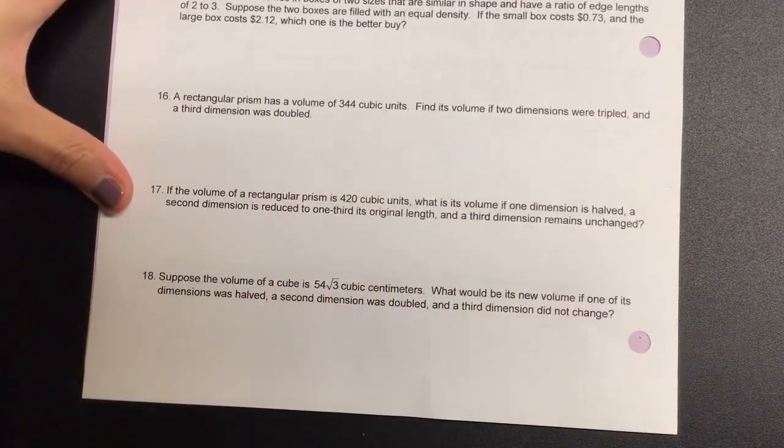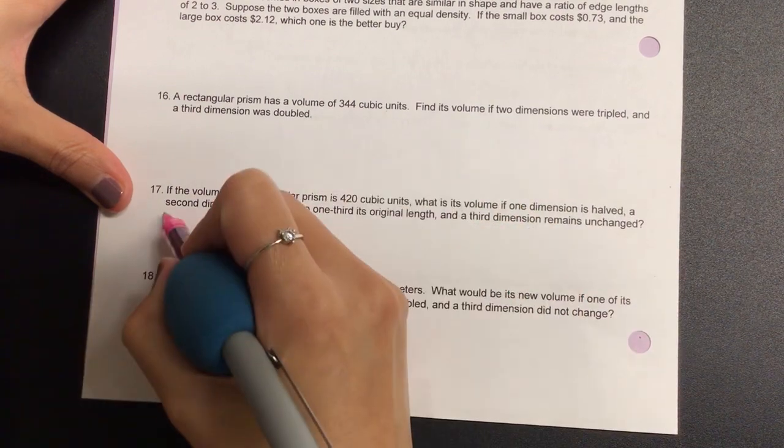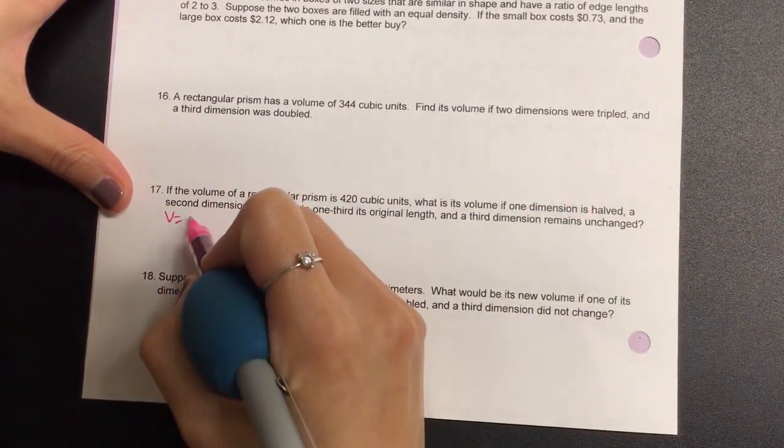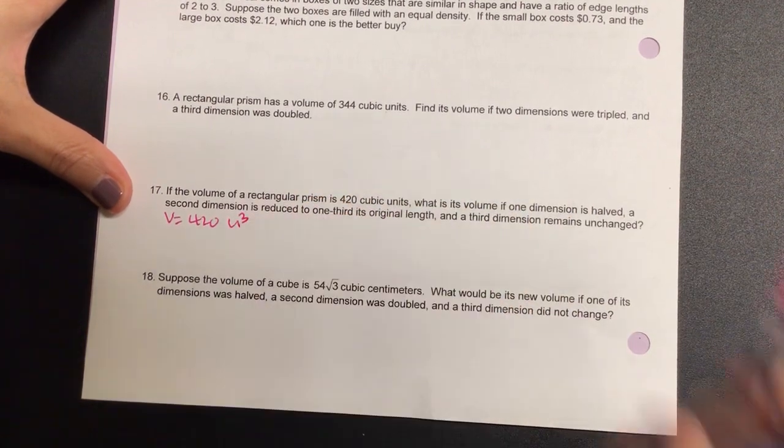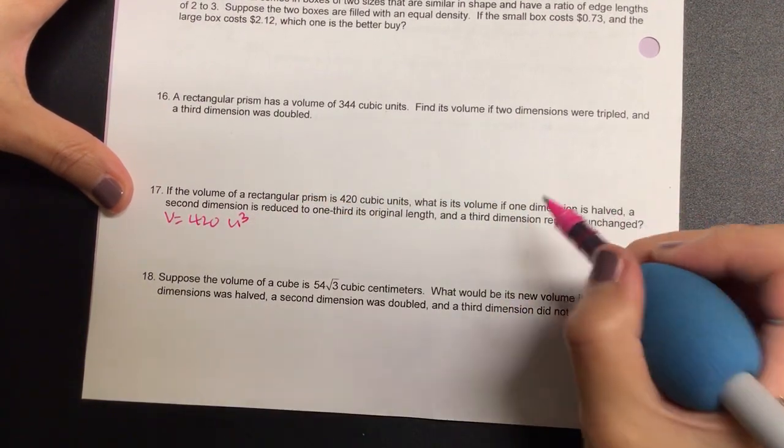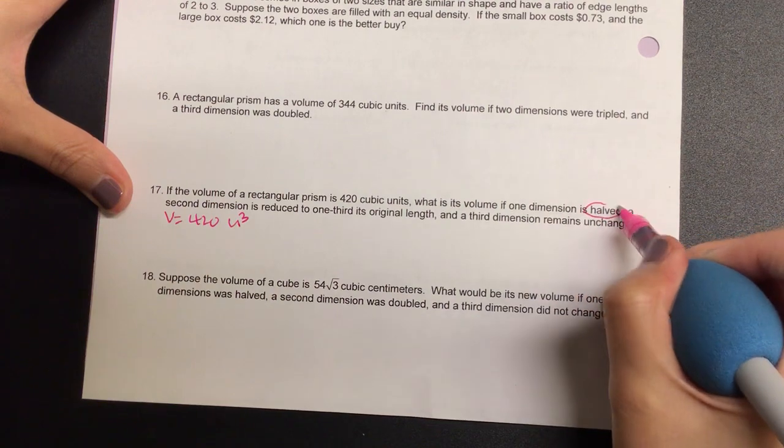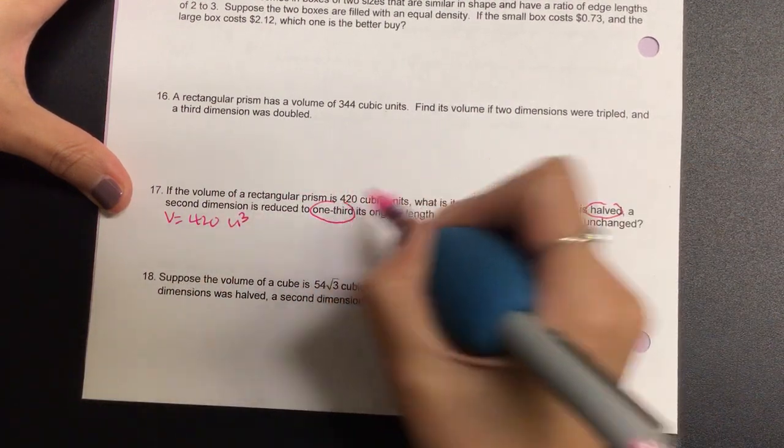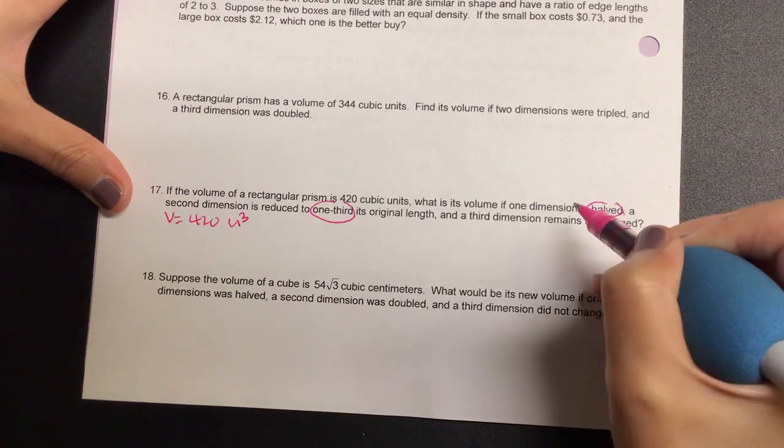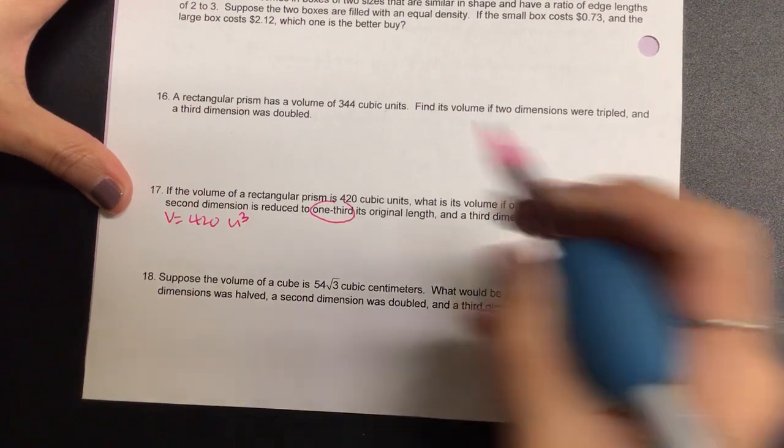So we have the volume is already 420 cubic units, and then let's look at our changing dimensions. One dimension is halved, the other one is reduced to one-third, and then the third remains unchanged.